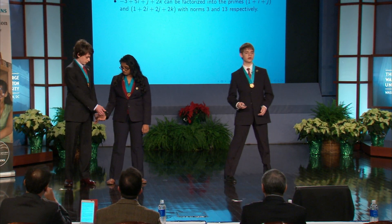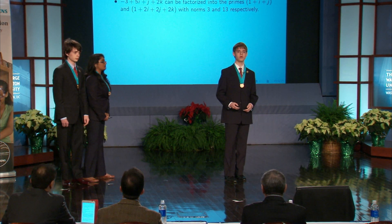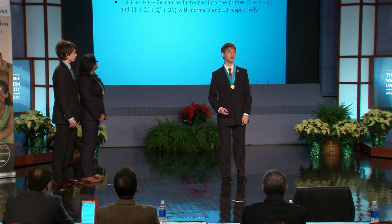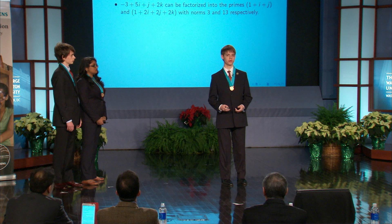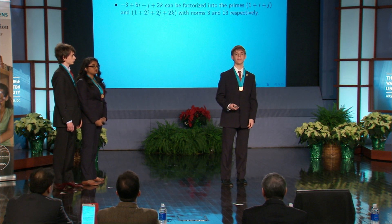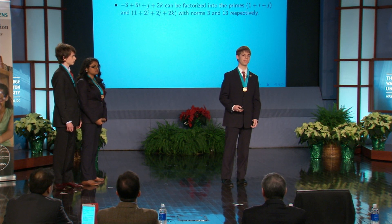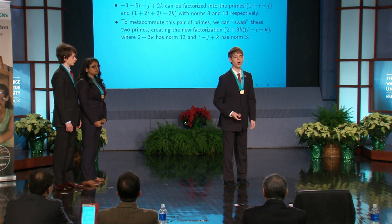As an example, the quaternion negative 3 plus 5i plus j plus 2k has a norm of 39. Since primes in the Hurwitz integers are those with prime norm, we can factor it into a prime of norm 3 times a prime of norm 13, specifically (1 plus i plus j) and (1 plus 2i plus 2j plus 2k). Metacommutation tells us there is also a factorization as a prime of norm 13 times a prime of norm 3 — namely (2 plus 3k) times (i minus j plus k) — and these two new primes are unique up to left associates.